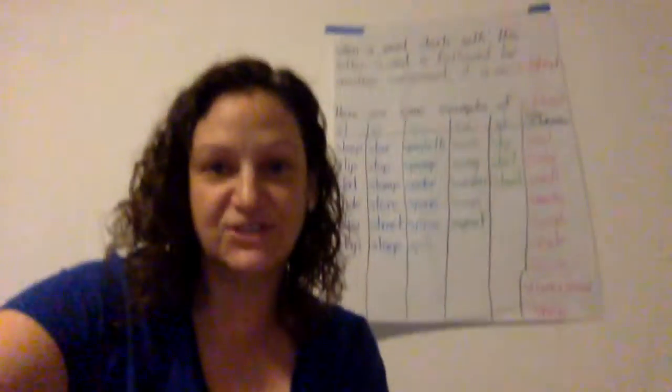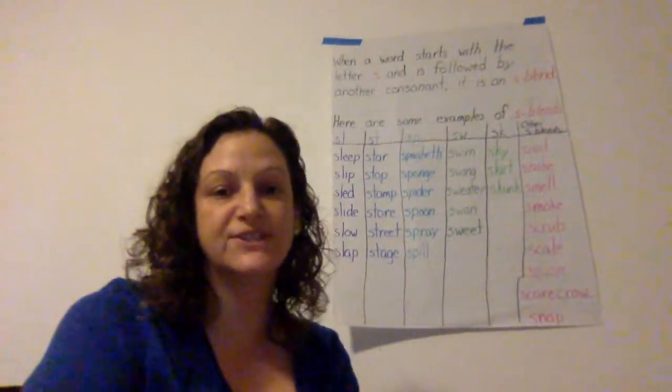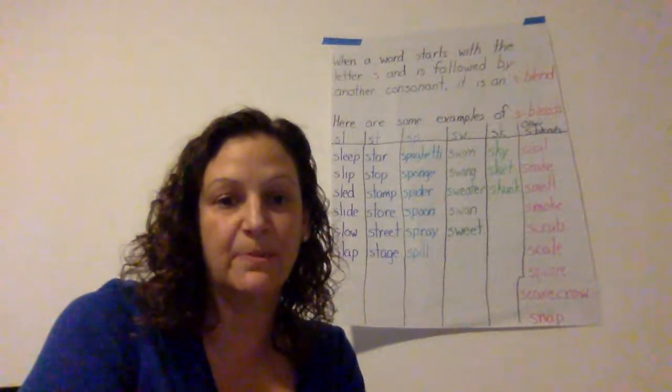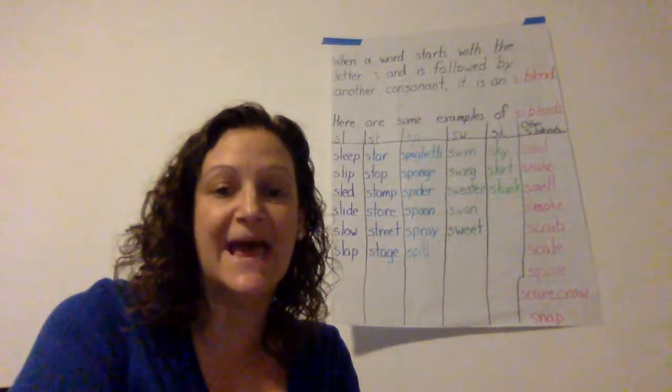Hi boys and girls! It's Miss Corbin. I'm here with Shay and Grace and all the clean laundry I need to fold, and we are going to talk to you about s-blends today. When a word starts with the letter S and is followed by another consonant, it is an s-blend.